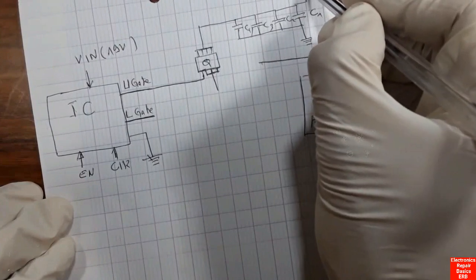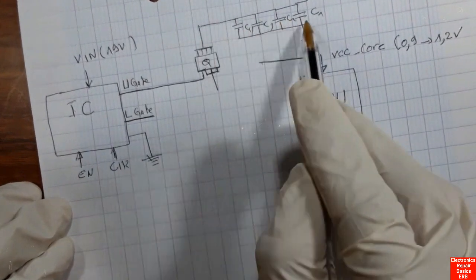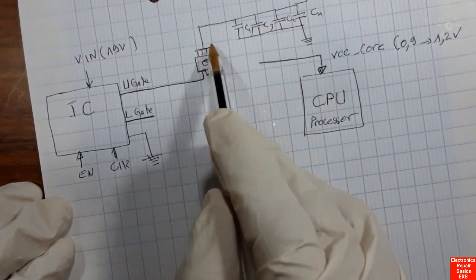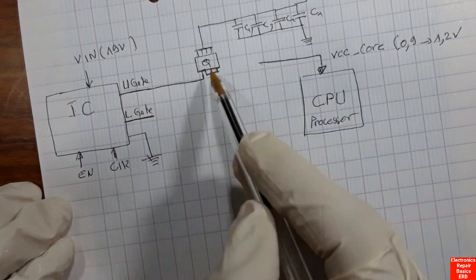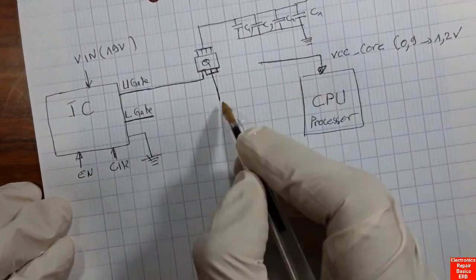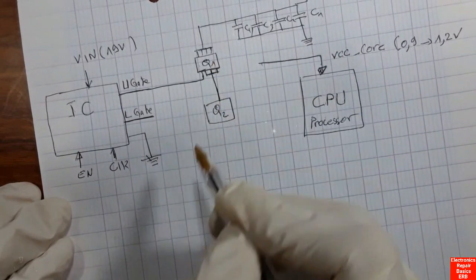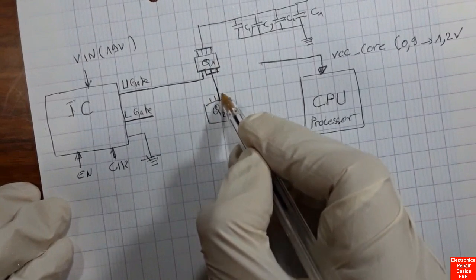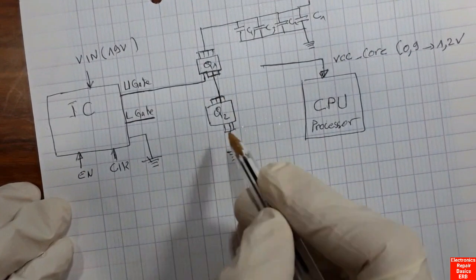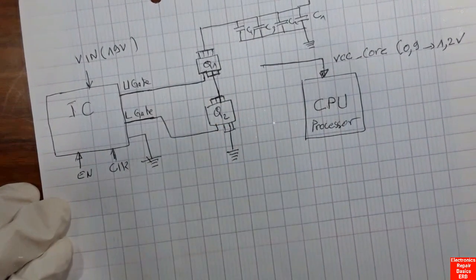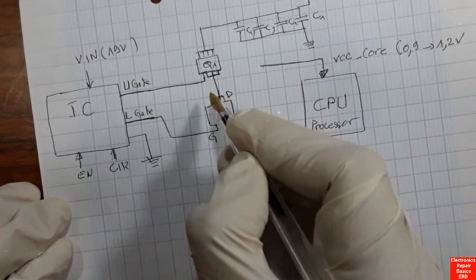The drain of the first MOSFET is connected directly to some ceramic capacitors that filter the input voltage. These capacitors — C1, C2, C3, C4 — are connected to ground. The input voltage of about 19 volts from the power jack passes through these filtering capacitors and through the first MOSFET. The control signal is applied to the gate of this MOSFET.